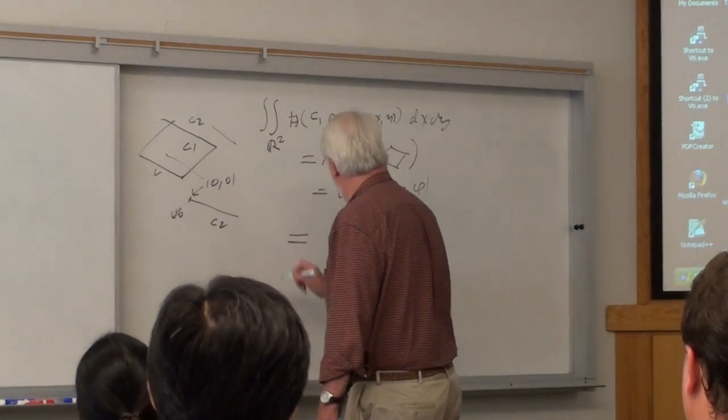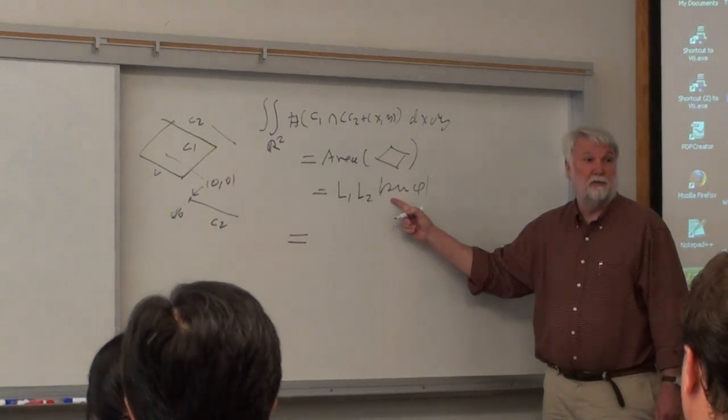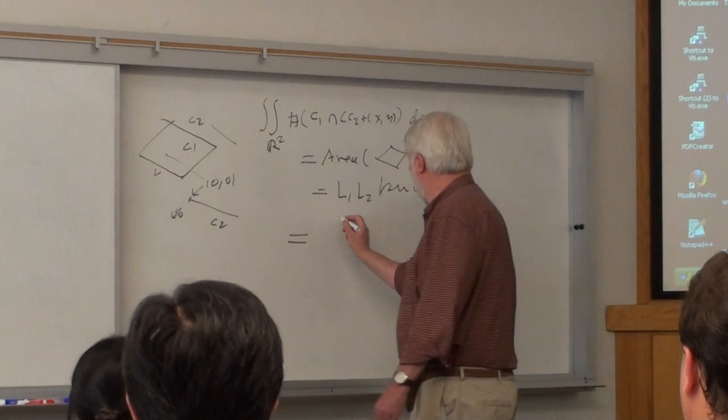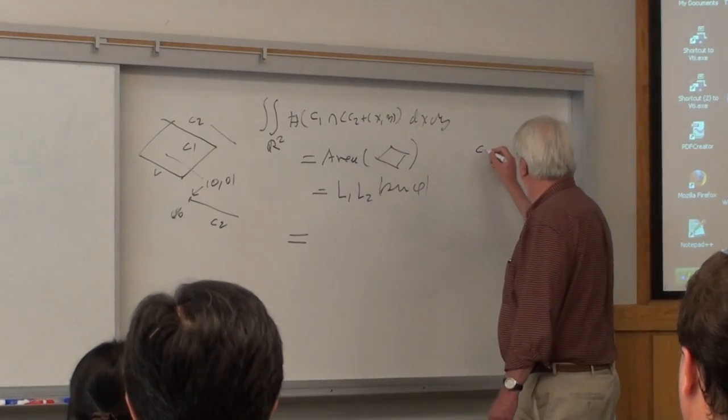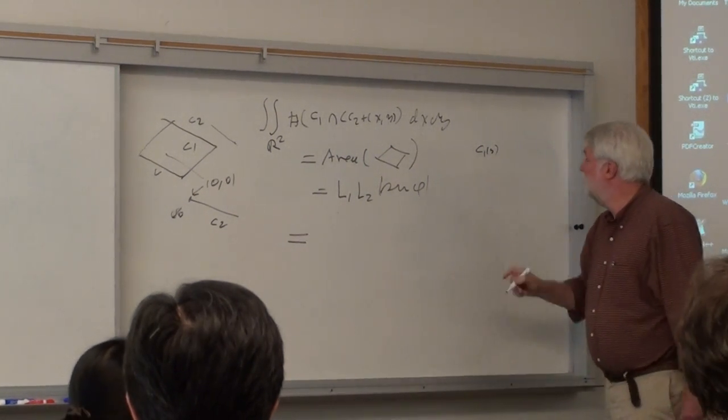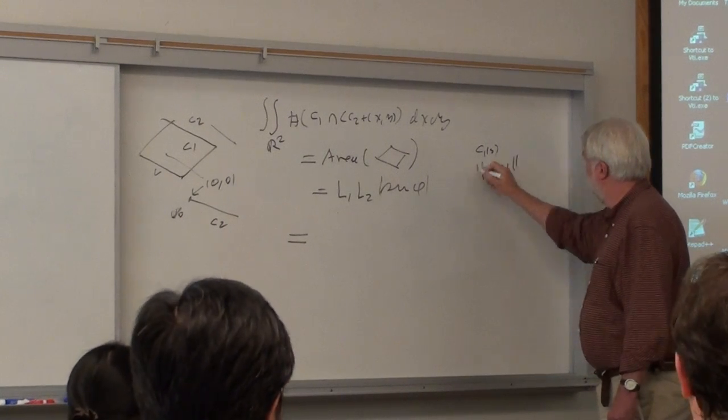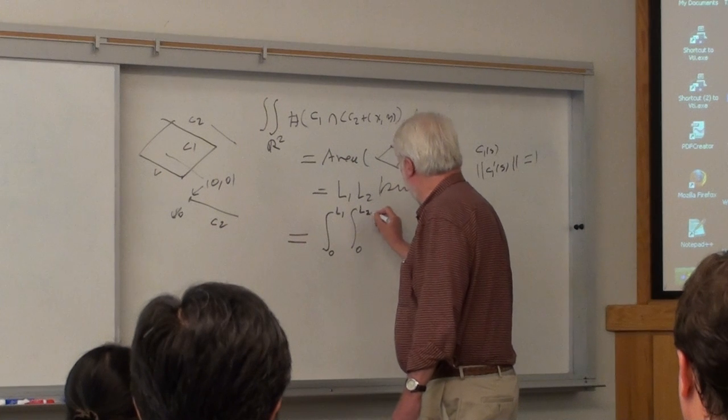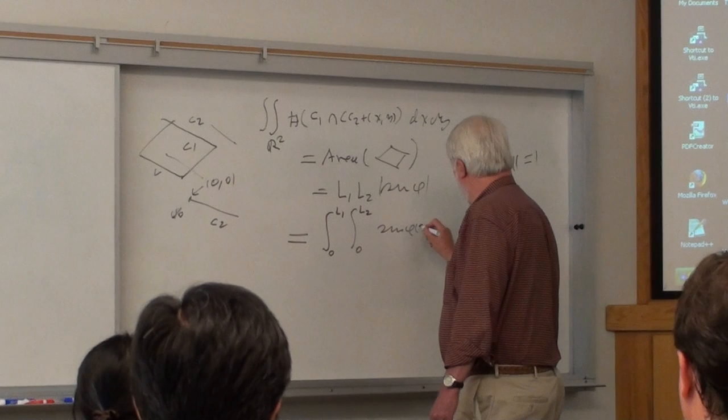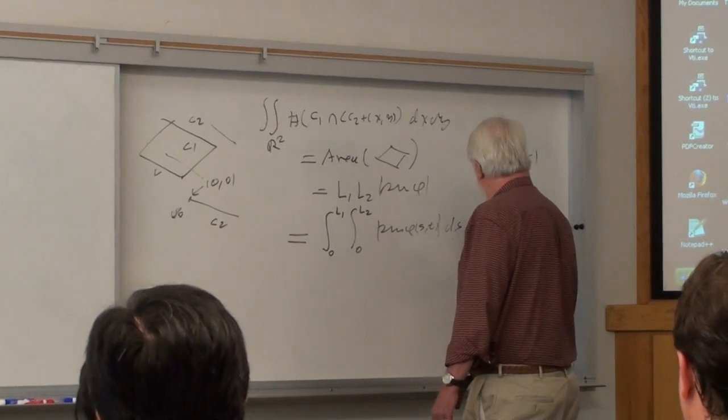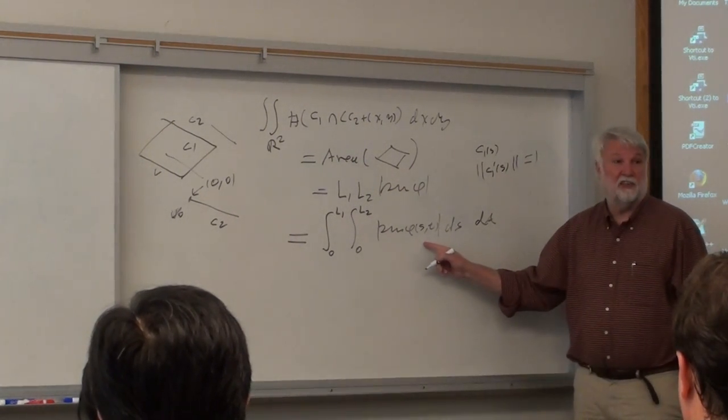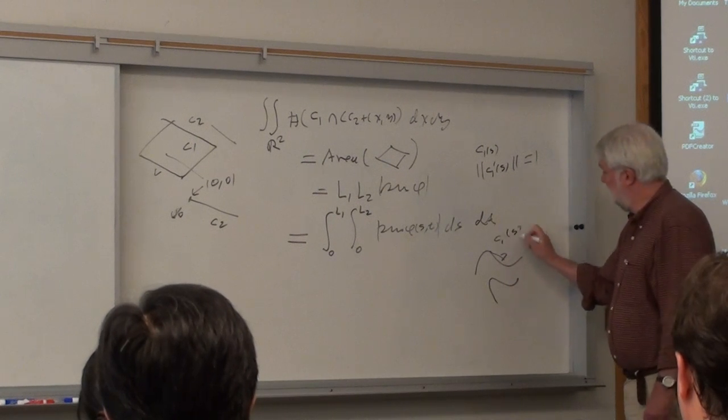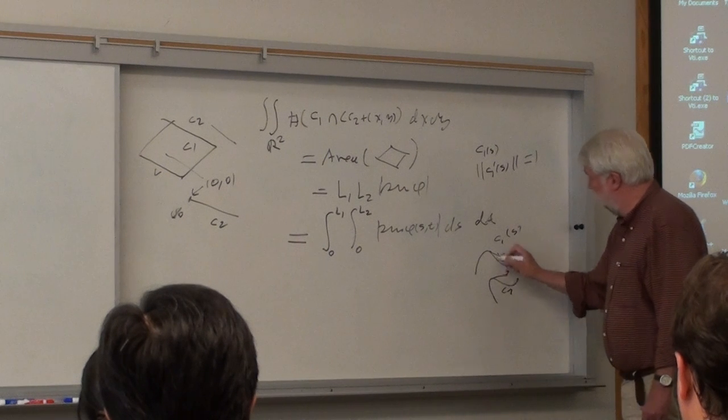Well, when is this going to intersect this length? If I translate this by something, if I translate it by XY, I'm going to draw a parallel line. So here's C2. If I take this endpoint and move it up here, I'm going to get one point of intersection. Any other point, I'm going to have no intersections. So if I look at this integrand here, it's going to have the value one when I am inside this parallelogram, and it's going to be zero otherwise. So this thing is just the area of this thing here, which is the length of the first one, the length of the second one, times the sine.